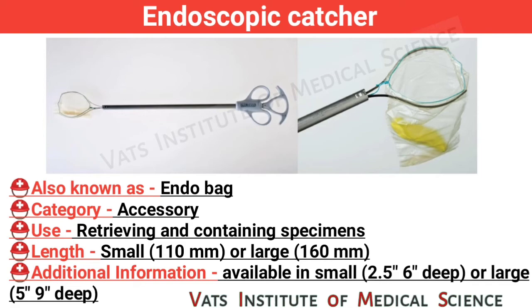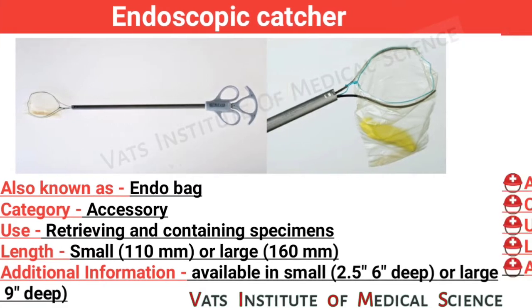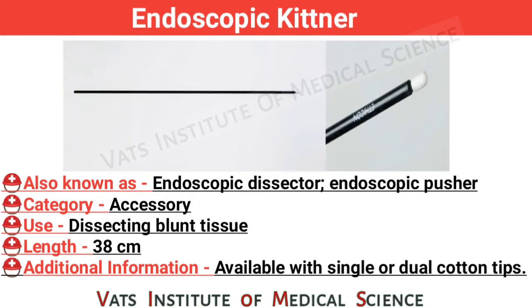Endoscopic catcher, also known as endo bag. Category: accessory. Use: retrieving and containing specimen. Length: small 110 mm or large 160 mm. Additional information: available in small 2.5 inch by 6 inch deep, or large 5 inch by 9 inch deep.